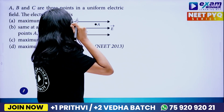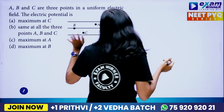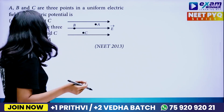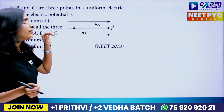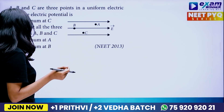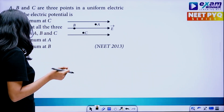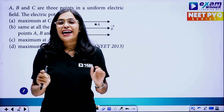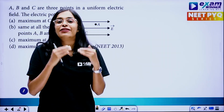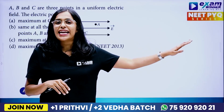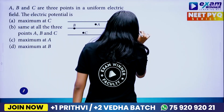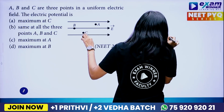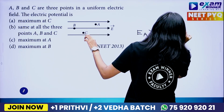A, B, C are three points in a uniform electric field. The question is: what is the electric potential — maximum at C, the same at all three points, maximum at A, or maximum at B? In a uniform electric field, the potential increases opposite to the field direction. So electric field at A is greater than electric field at C, which is greater than electric field at B.